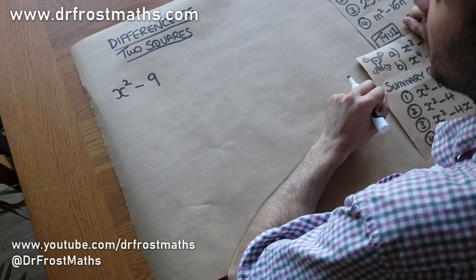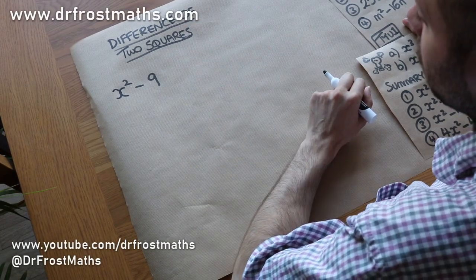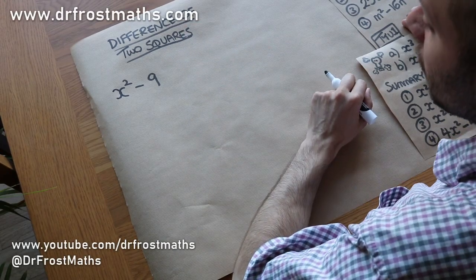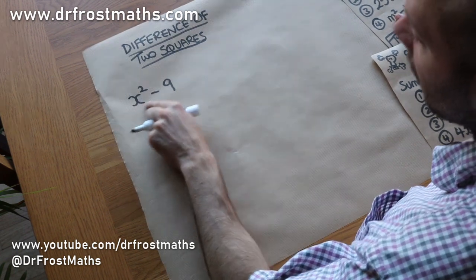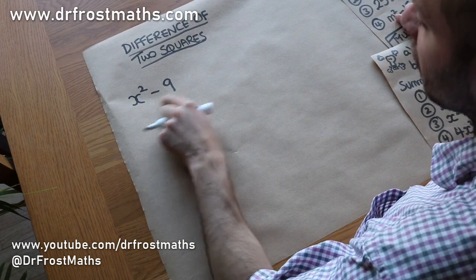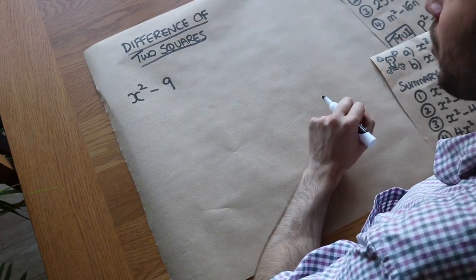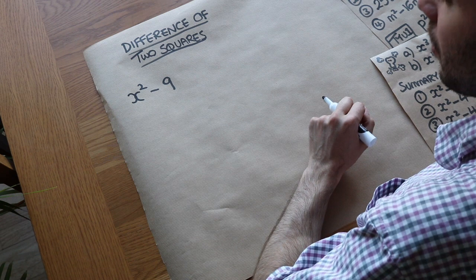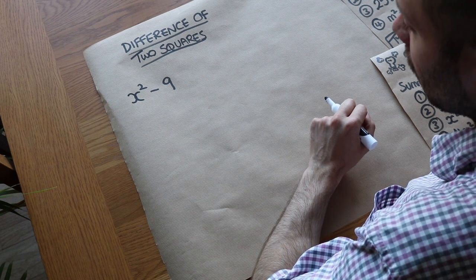Hello and welcome to this teaching video on the difference of two squares. Let's say we had an expression like x squared minus 9, and we might try to use one of the previous methods of factorisation to factorise this.